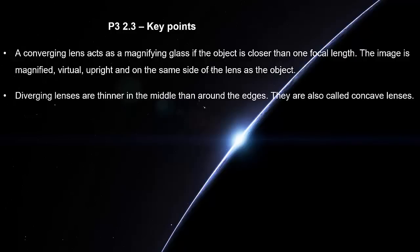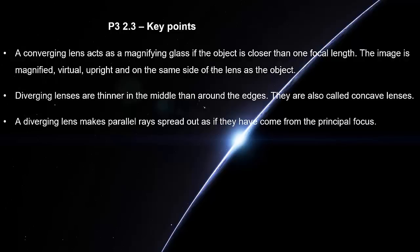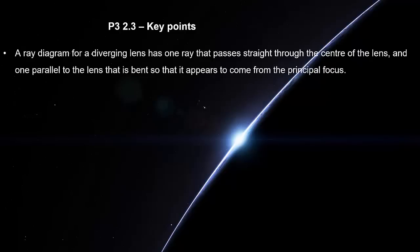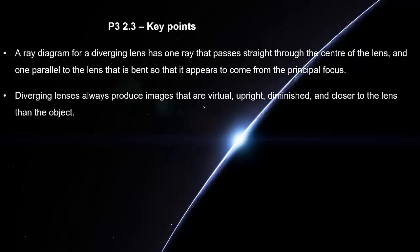Diverging lenses are thinner in the middle than around the edges. They are also called concave lenses. A diverging lens makes parallel rays spread out as if they have come from the principal focus. A ray diagram for a diverging lens has one ray that passes straight through the center of the lens and one parallel to the lens that is bent so that it appears to come from the principal focus. Diverging lenses always produce images that are virtual, upright, diminished and closer to the lens than the object.